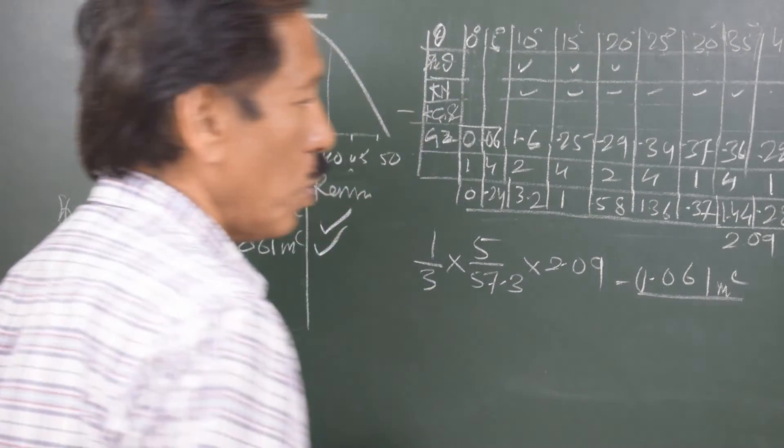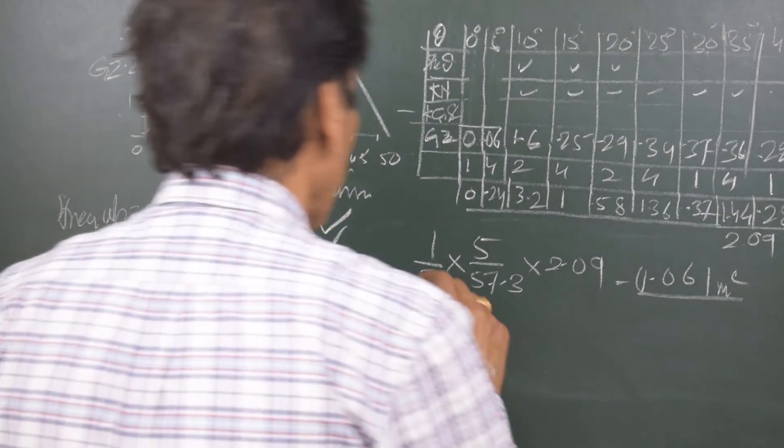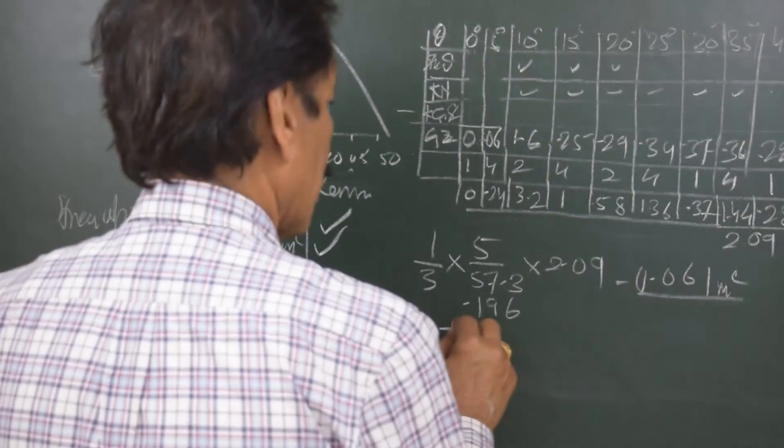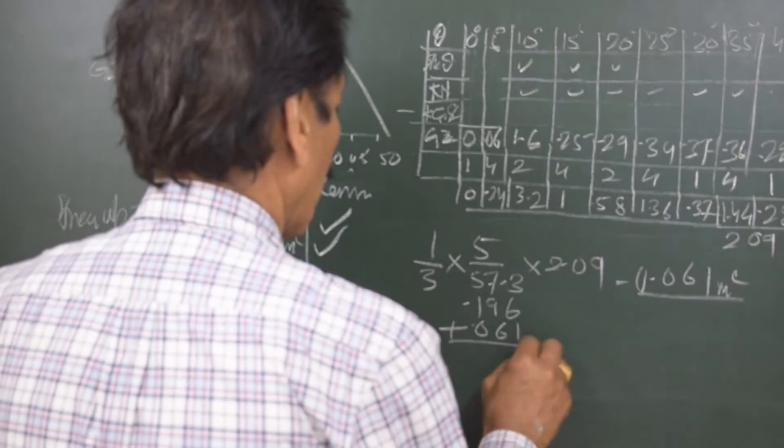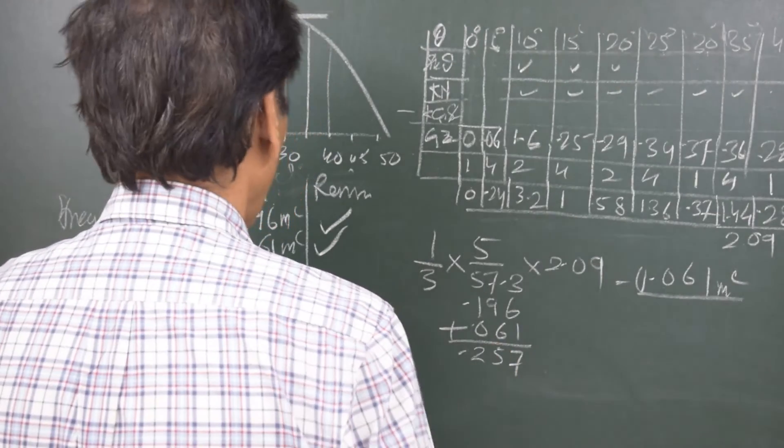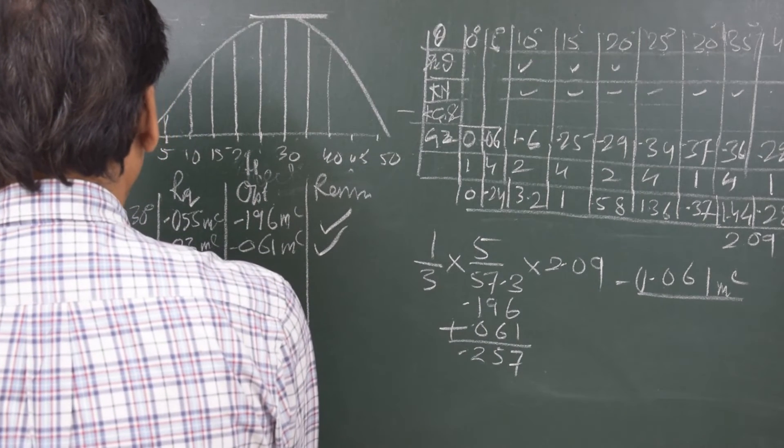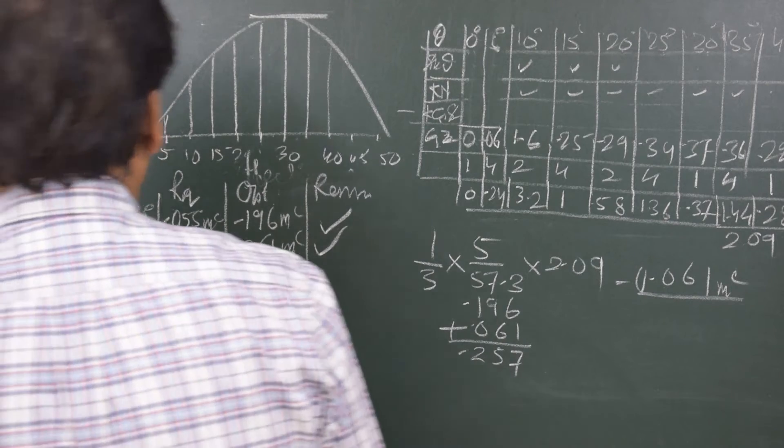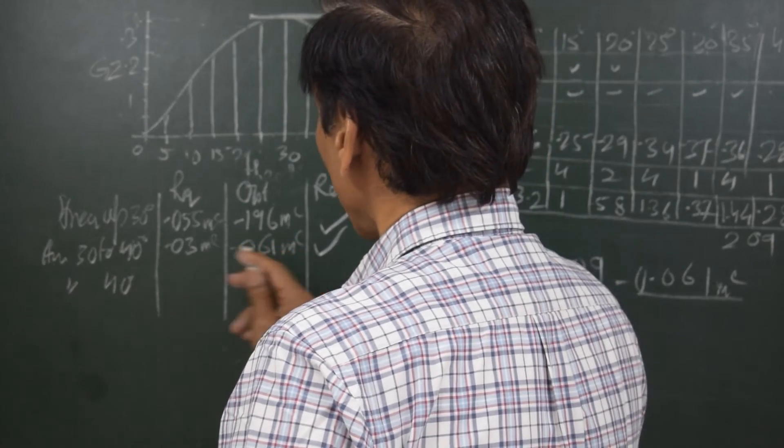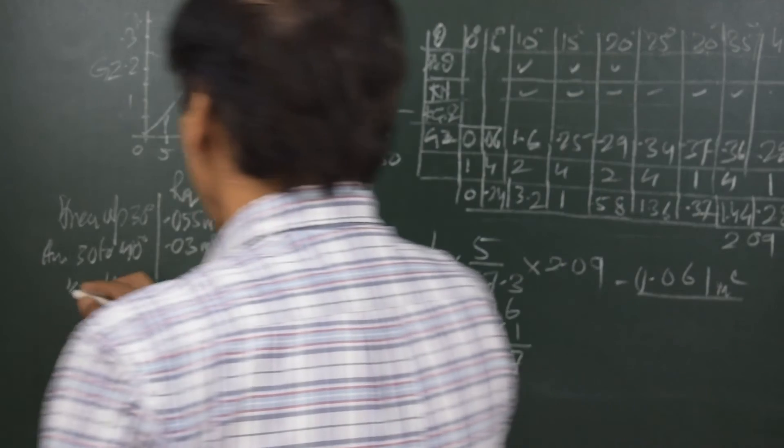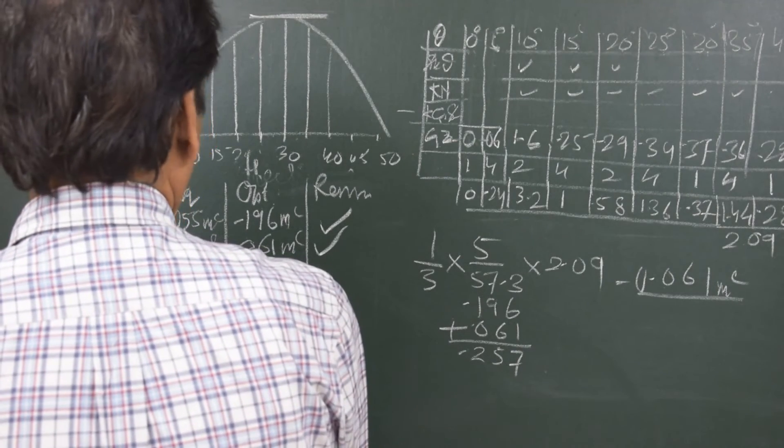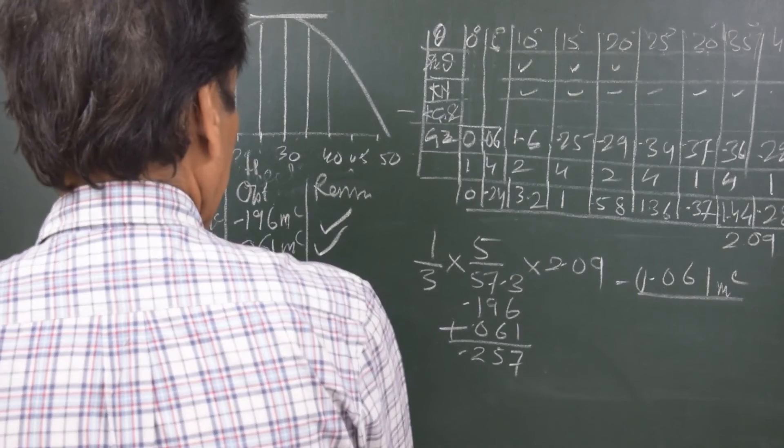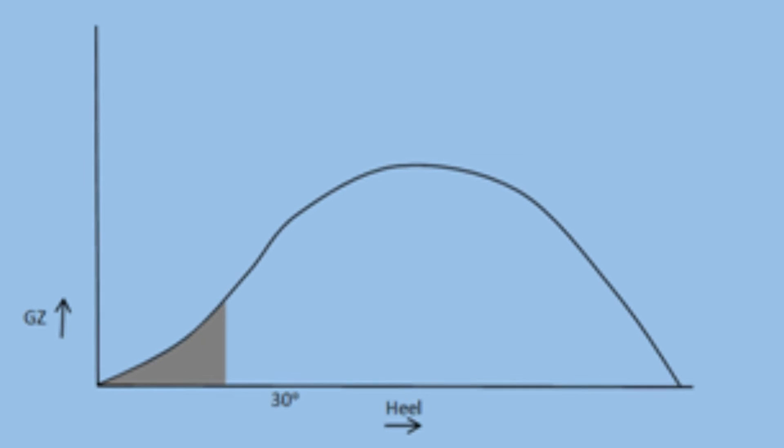Now the area requirement up to 40 degrees what we have got is 0.196 plus 0.061, the total is 0.257. So area up to 40 degrees. There is a correction, area from 30 to 40 is 0.061, what is required is 0.03 meter radian. Area up to 40 degrees, the requirement is 0.09 meter radian and what we have got is 0.257 meter radian. So all the criteria in respect of area are satisfied.